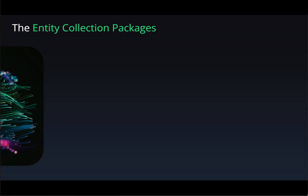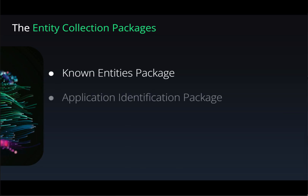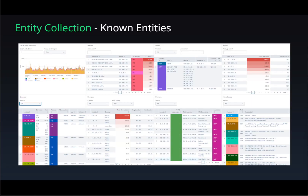The Entity Collection is comprised of three packages: the Known Entities Package, the Application Identification Package, and the Local Subnets Package. The Known Entities Package includes information about everything on your networks.